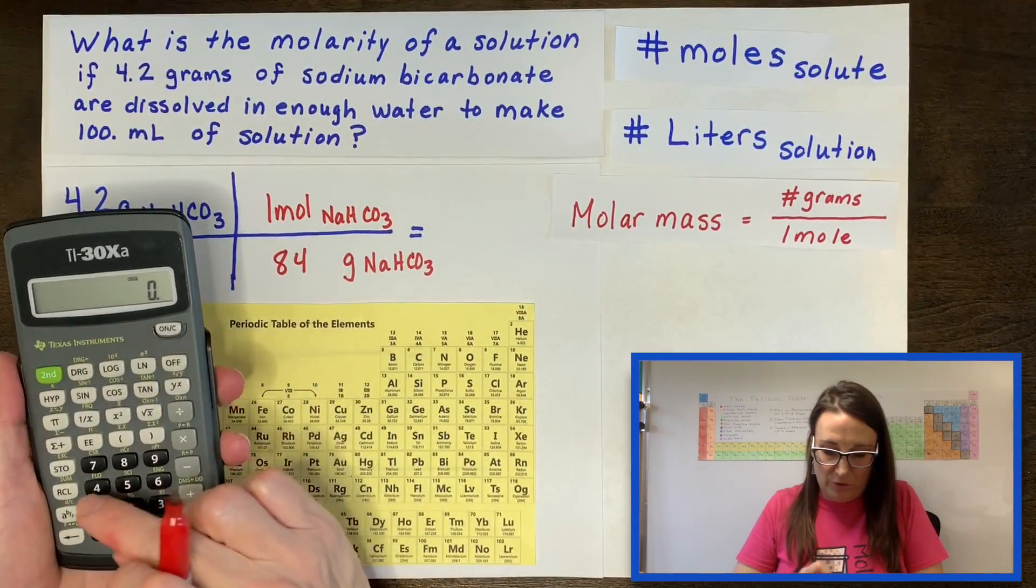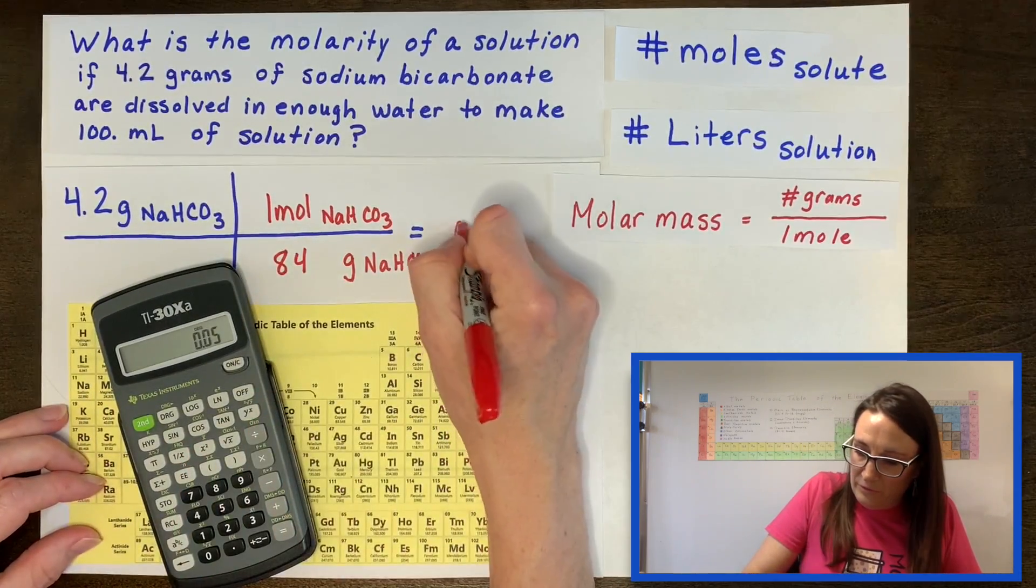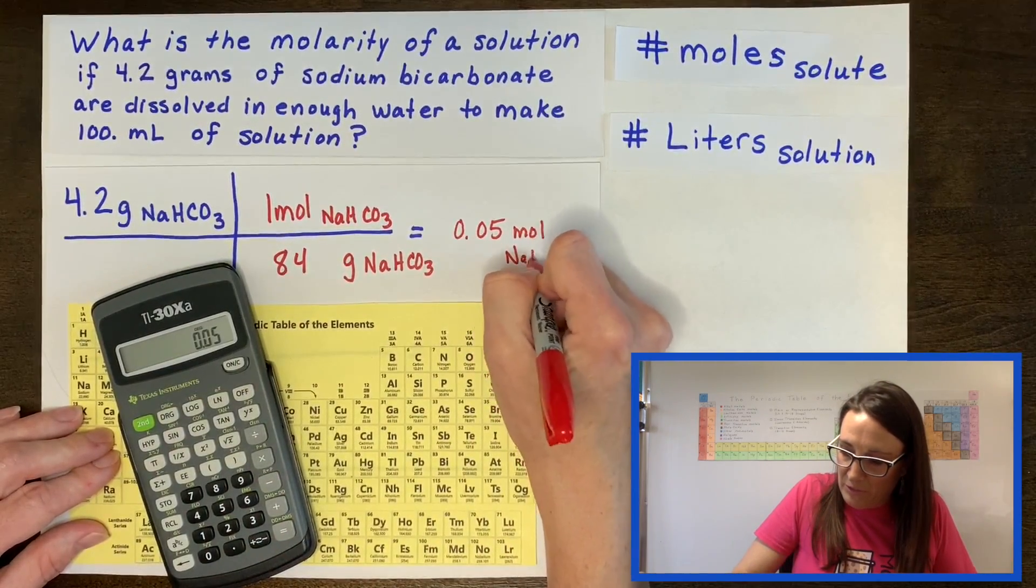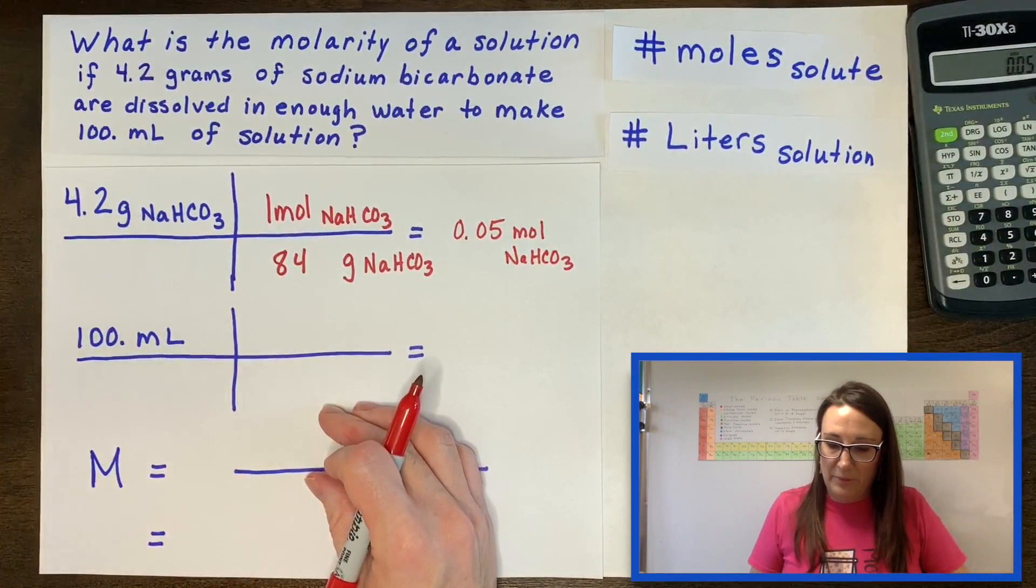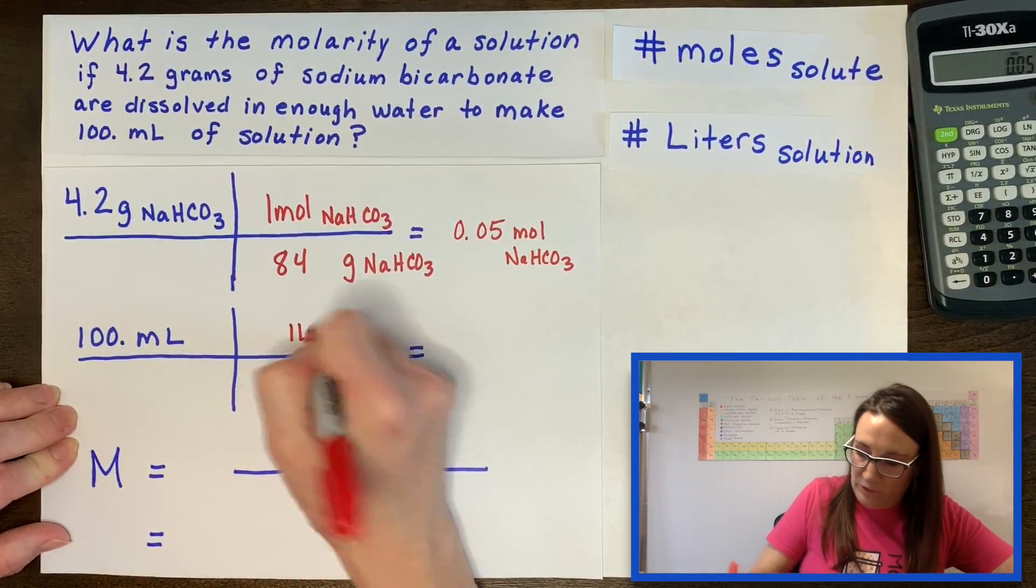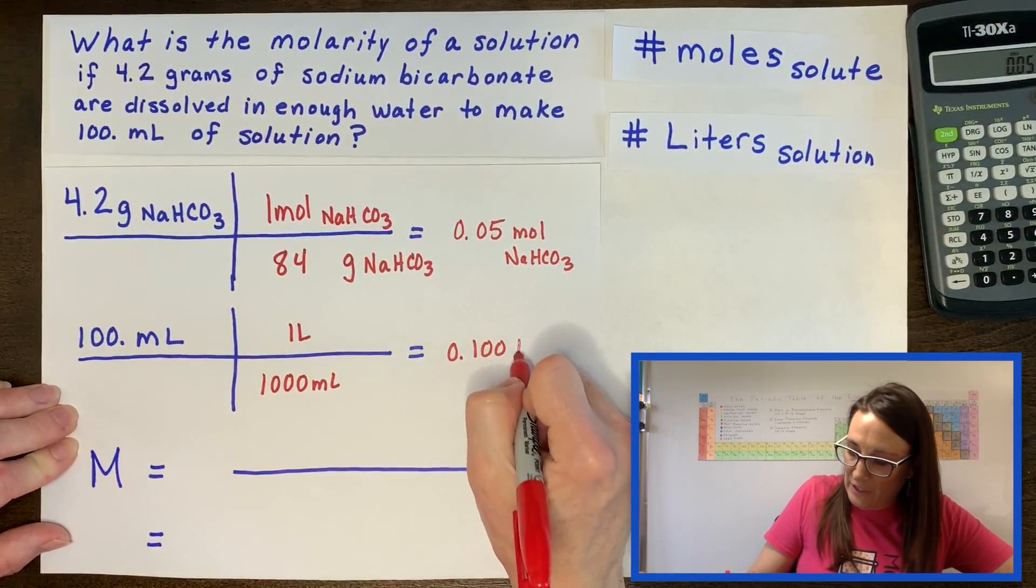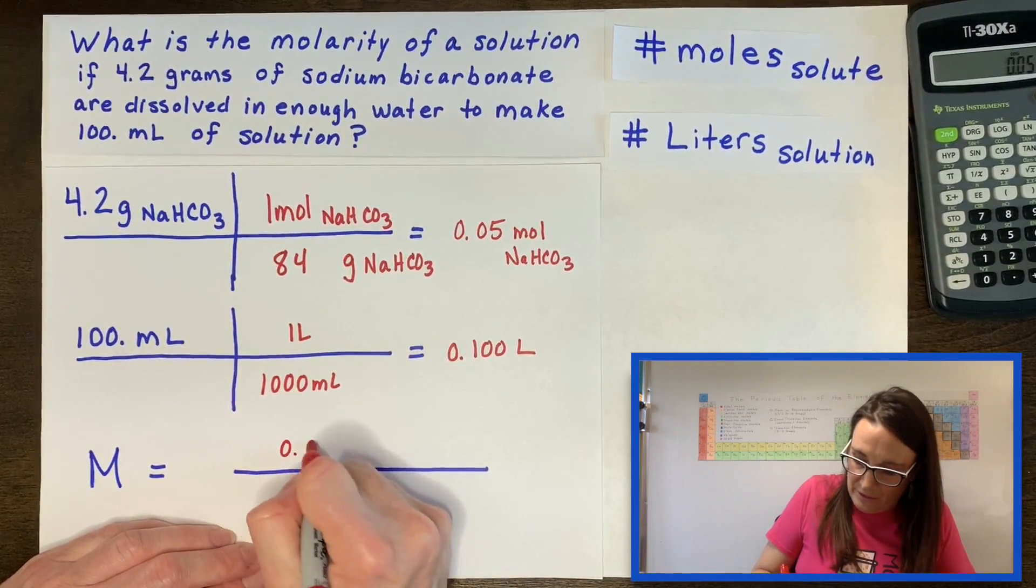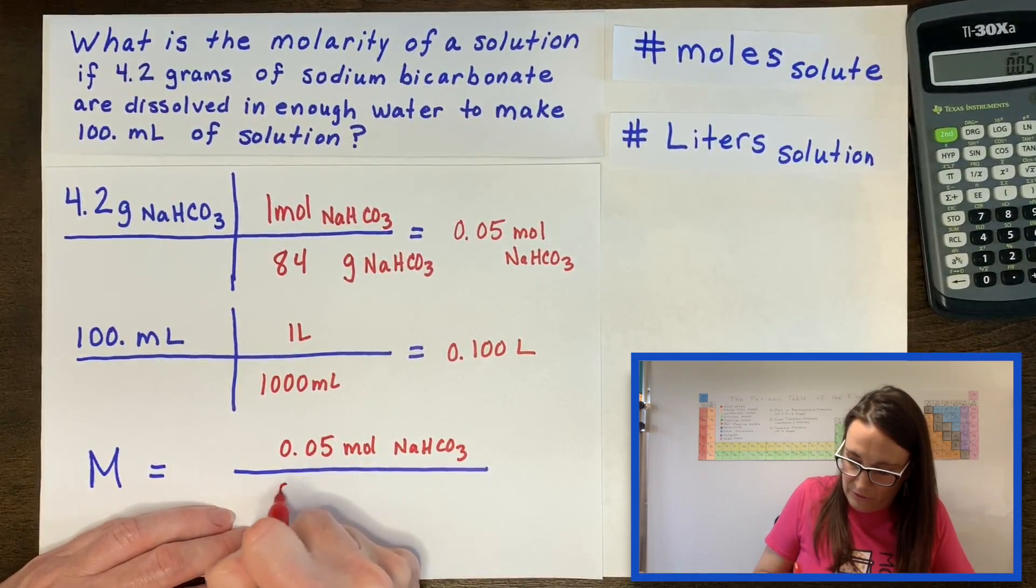You divide these two, and this will be your mole amount, which is 4.2 divided by 84. So I get 0.05 moles of sodium bicarbonate. Then I need to convert from my milliliters to liters. Using that same conversion, 1,000 milliliters is one liter. I'm going to carry the extra digits because those are all significant. There's my volume. I'm going to take my moles and divide it by my liters to get my concentration for this solution.